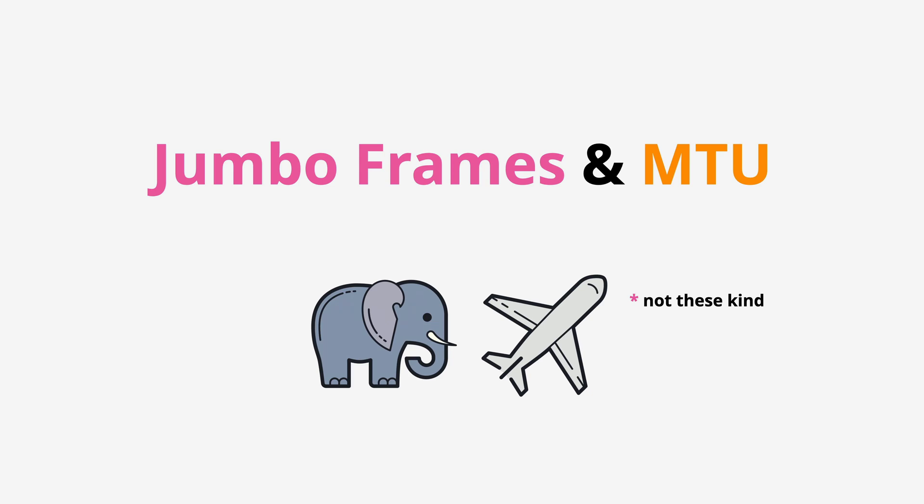Welcome back. In this lesson I want to talk about jumbo frames, as well as how they're supported within AWS. So what is a jumbo frame? The maximum Ethernet V2 frame size is 1500 bytes — that's what you should think of as a standard frame. Anything bigger than this is classified as a jumbo frame, but generally when most people refer to jumbo frames, they mean a frame with a maximum size of 9000 bytes.